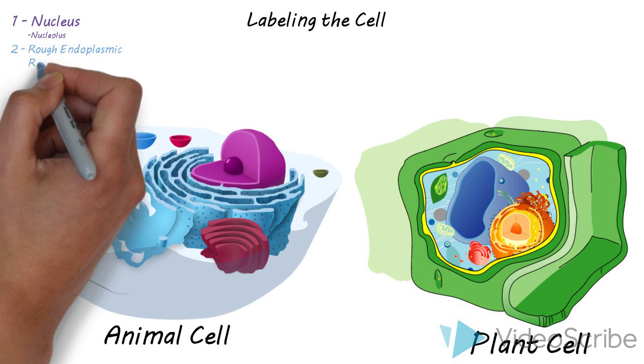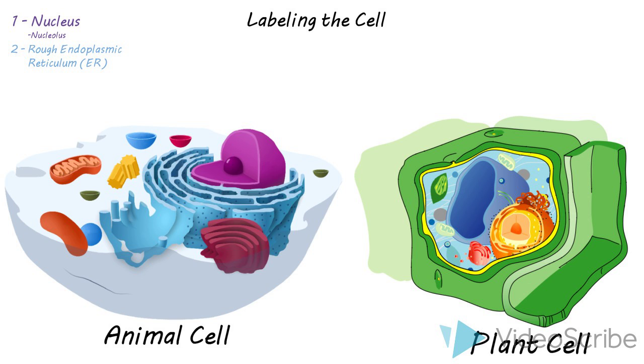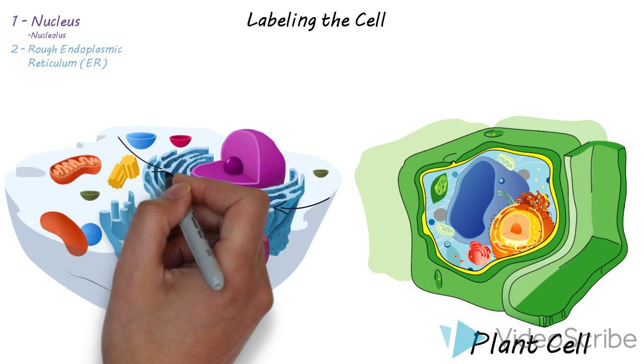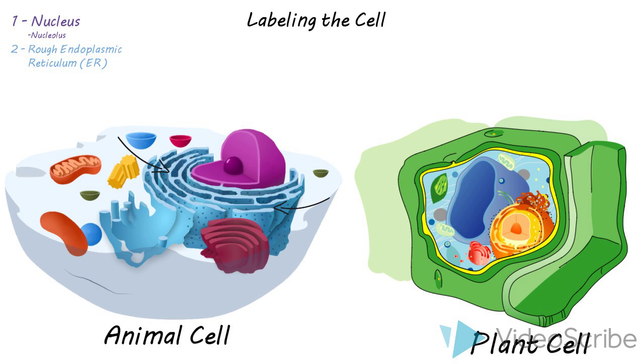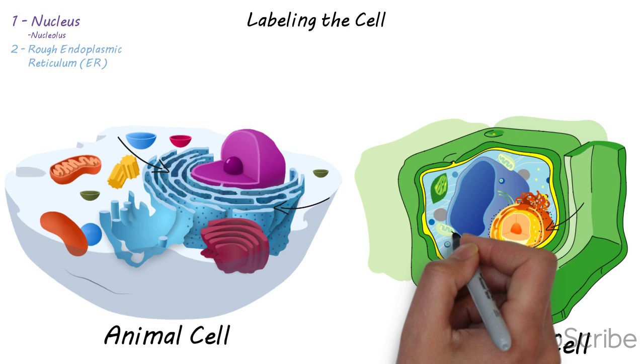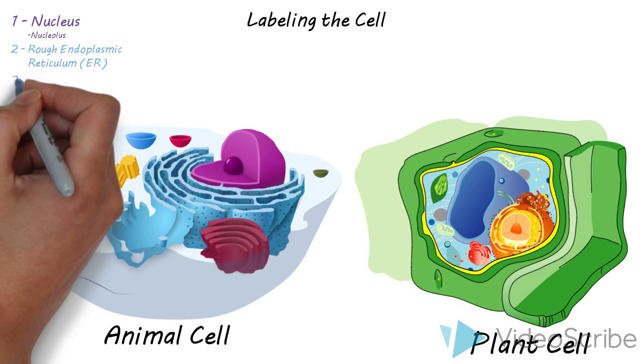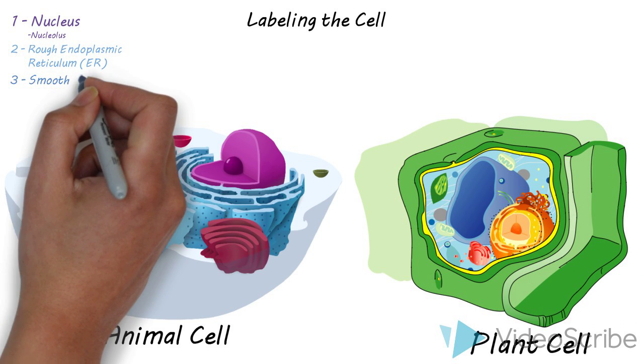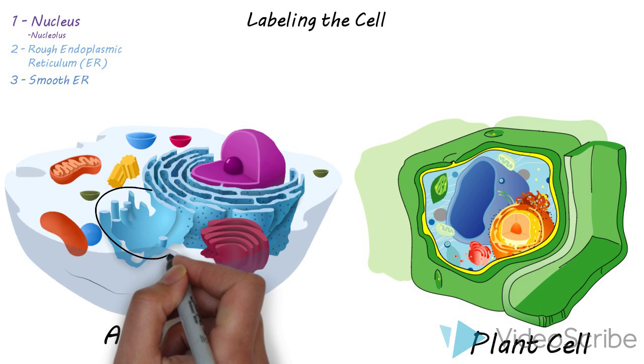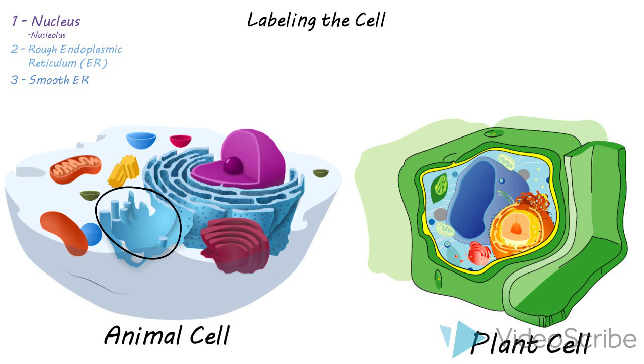The rough ER surrounds the nucleus and it's studded with ribosomes. This is the rough endoplasmic reticulum. We just abbreviate that to ER. The smooth ER or smooth endoplasmic reticulum is continuous with the rough ER but does not have the ribosomes.